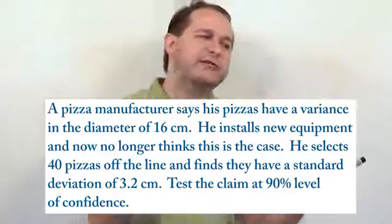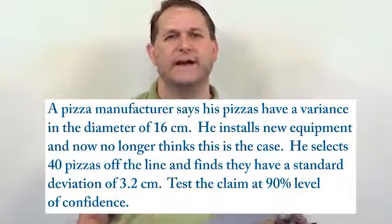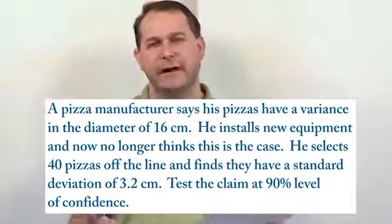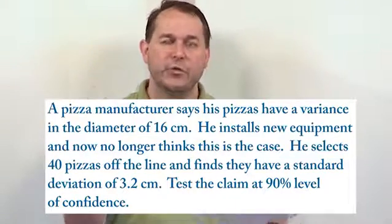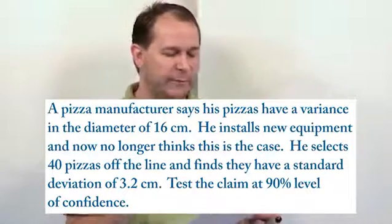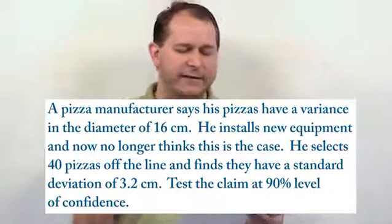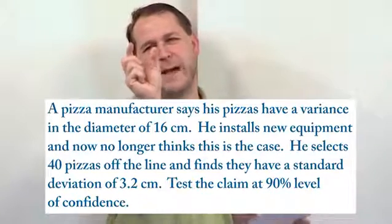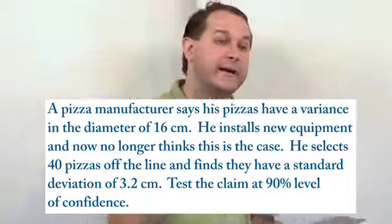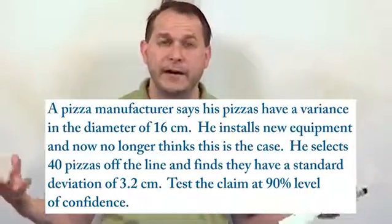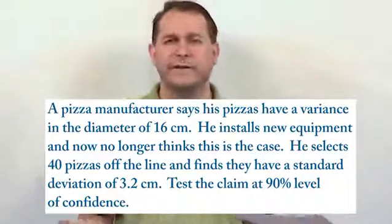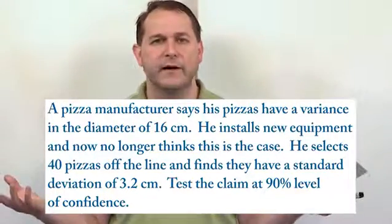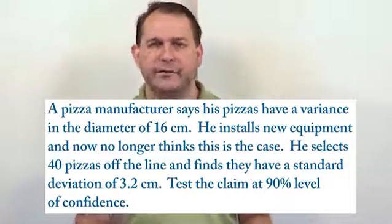If you wanted to look at it in terms of standard deviation, which is a much more easily understandable concept that measures the spread of the data, you would take the square root of the variance, and the square root of 16 is 4. So the problem could also be rephrased as: the manufacturer says his pizzas have a standard deviation in the diameter of 4 centimeters. That's not that big. When terms like variance appear, just remember the variance numbers are larger because it's the square of the standard deviation — it still represents the spread of the data, but the number looks bigger.